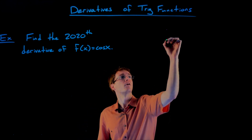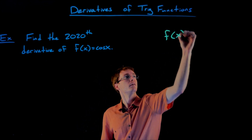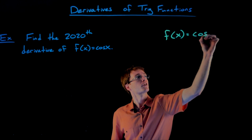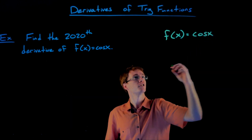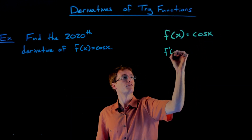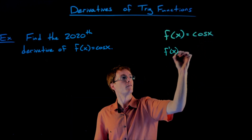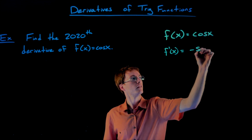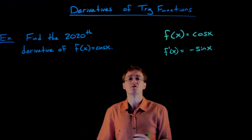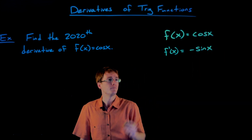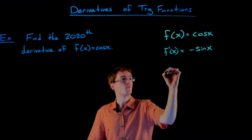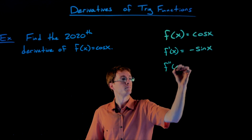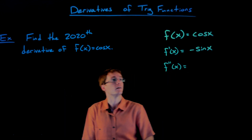Remember our starting function: f of x is just our cosine function, and we already know the first derivative of our cosine function. That is our negative sine function. And now we need to keep going.